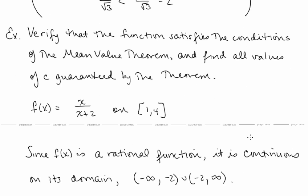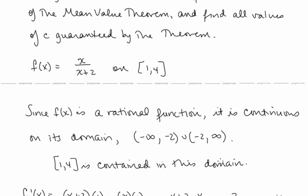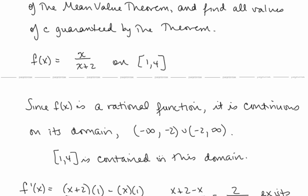Let's take a look at another example: verify that the function satisfies the conditions of the Mean Value Theorem and find all values of c guaranteed by the theorem. f(x) = x/(x+2) on the interval [1, 4]. We have to first show f is continuous on this closed interval, then show f is differentiable on the open interval (1, 4). Since f is a rational function, it is continuous on its domain. The only point not in the domain is x = −2, so the domain is (−∞, −2) ∪ (−2, ∞), and the closed interval [1, 4] is certainly contained in this domain. So f is continuous on [1, 4].